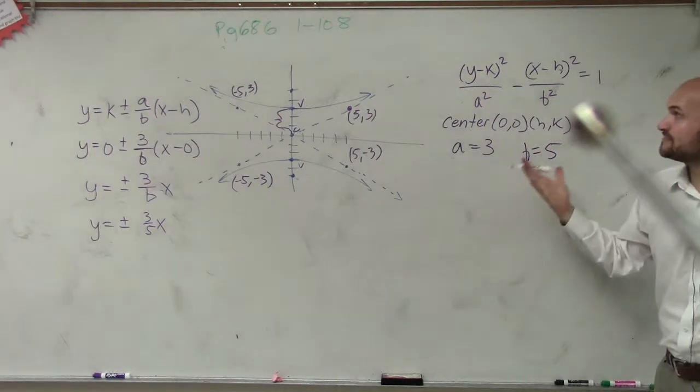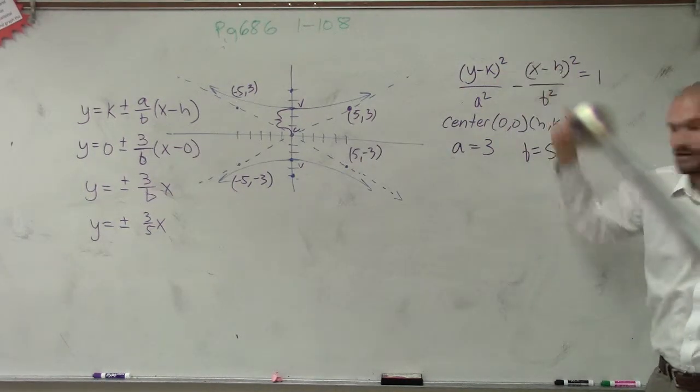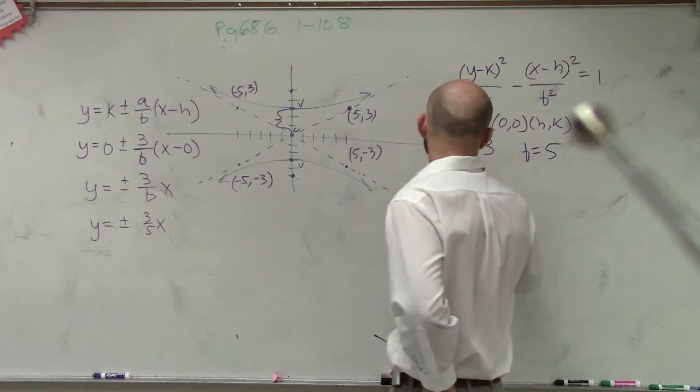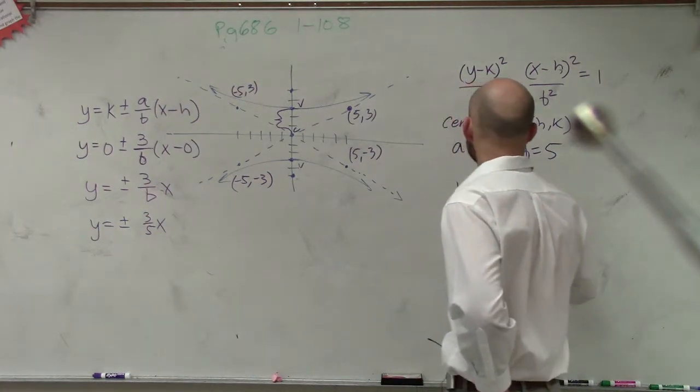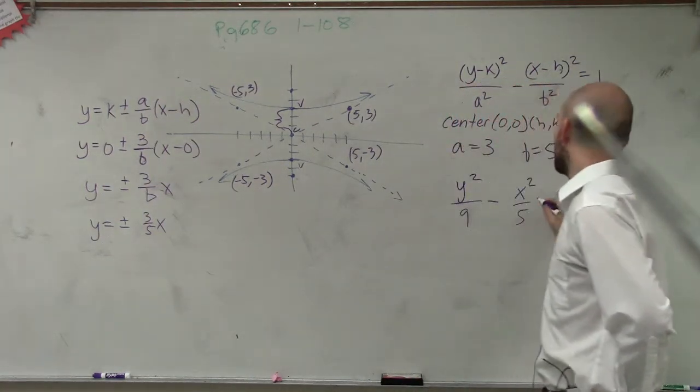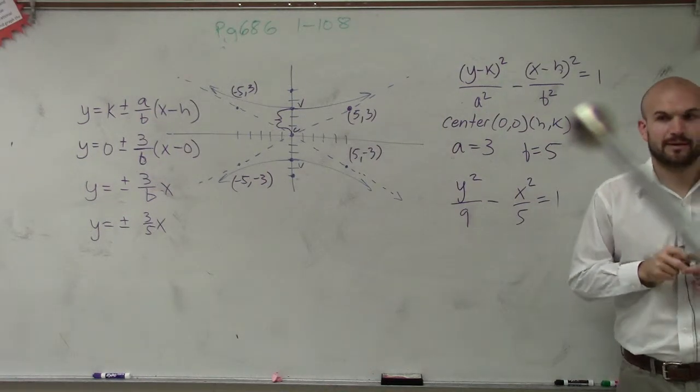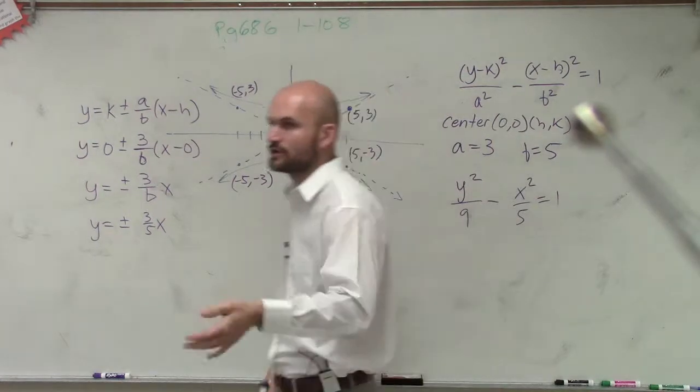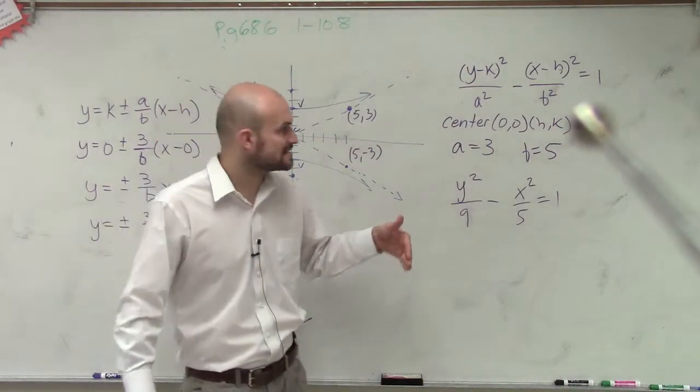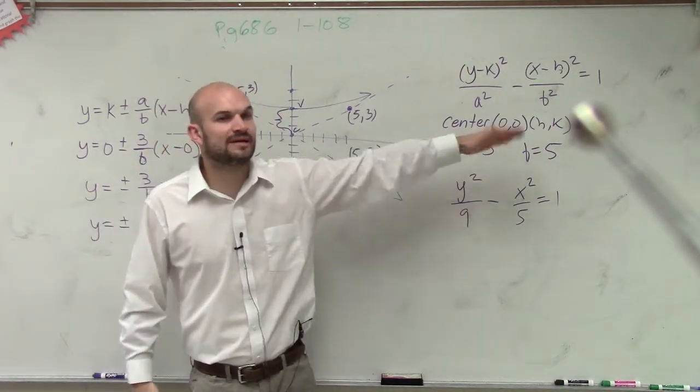So since I now know that b equals 5, and my center is (0, 0), the equation on my line is going to be y² over 9 minus x² over 25 equals 1. And that's it. So the main important thing, guys, again, is determining is it vertical or horizontal transverse axis, and then determining a, b, or c.